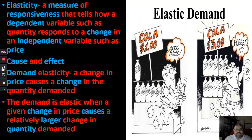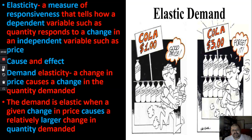In other words, it's a look at how the number of people who want something changes because of something like price. To make it easier, think of it as cause and effect: if the price goes really high, people are not going to buy as much; if the price goes really low, people will buy more. This doesn't apply to everything, but in certain cases it really, really works.